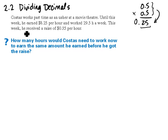If we look at the problem, the question is how many hours would Costas need to work now to earn the same amount he earned before he got the raise? Well, the same amount of money that he earned before was $243.38. But this time instead of making $8.25 an hour, he's now earned a little bit more. So we want to know how many hours does he have to work if he was being paid $8.60 an hour.